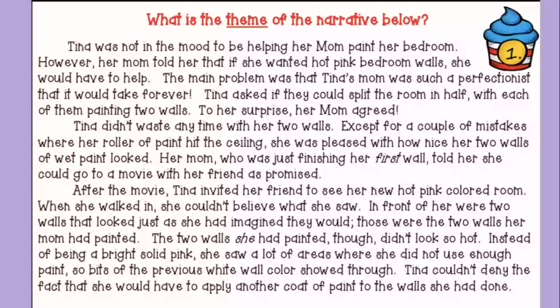So we're going to read this together and see if we can figure out a theme. Tina was not in the mood to be helping her mom paint her bedroom. However, her mom told her that if she wanted hot pink bedroom walls, she would have to help. The main problem was that Tina's mom was such a perfectionist that it would take forever. Tina asked if they could split the room in half with each of them painting two walls. To her surprise, her mom agreed. Tina didn't waste any time with her two walls, except for a couple of mistakes where her roller of paint hit the ceiling. She was pleased with how nice her two walls of wet paint looked. Her mom, who was just finishing her first wall, told her she could go to a movie with her friend as promised. After the movie, Tina invited her friend to see her new hot pink colored room. When she walked in, she couldn't believe what she saw. In front of her were two walls that looked just as she imagined they would — those were the two walls her mom had painted.